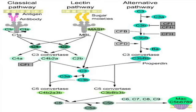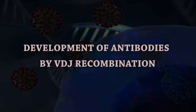This C3B acting as a C5 convertase cleaves C5 into C5A and C5B. C5A is released and C5B recruits C6 through C9 proteins to form the membrane attack complex.